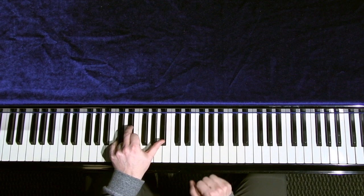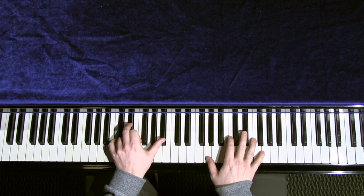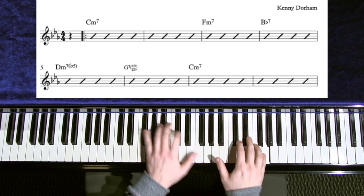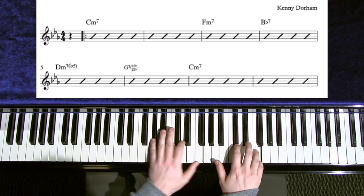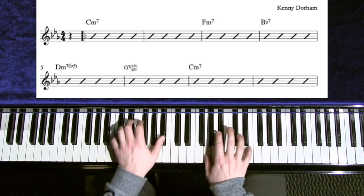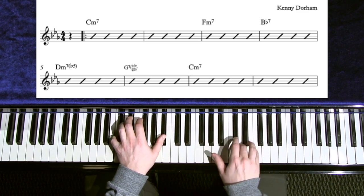We're going to be playing the beginning of Blue Bossa, so we're going to go C minor 7 to F minor 7 to B flat 7 to D half diminished to G altered to C minor 7.